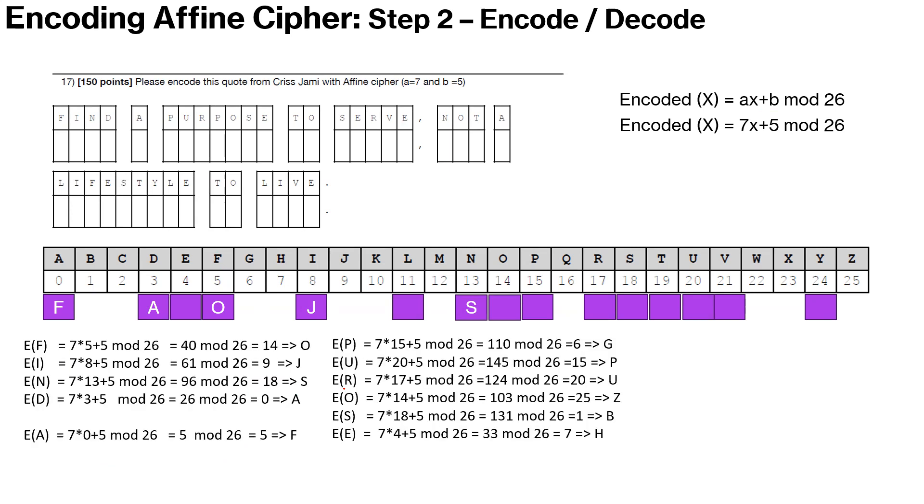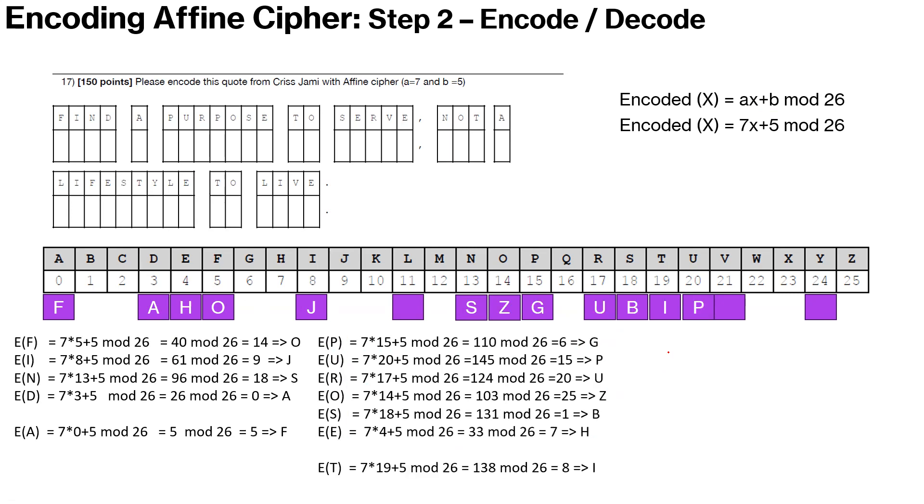So we continue doing this for the whole letters, alphabet set which make a purpose here and we find that these resolve to different encoded values. So we go ahead and populate those encoded values for purpose, whatever the alphabets which make purpose and then T here for to.